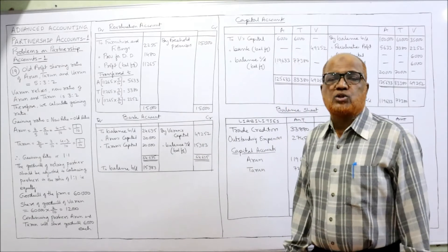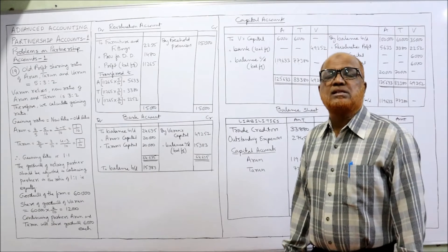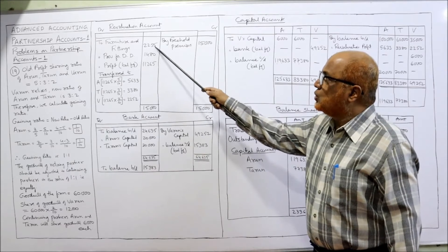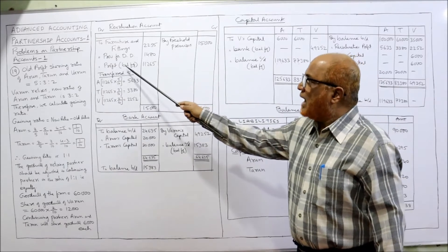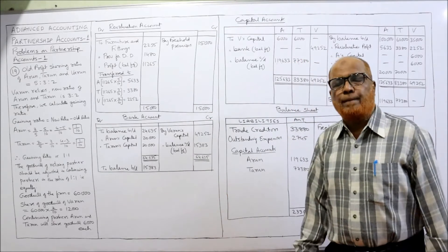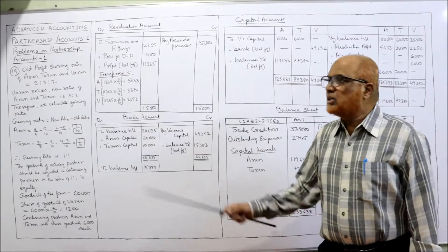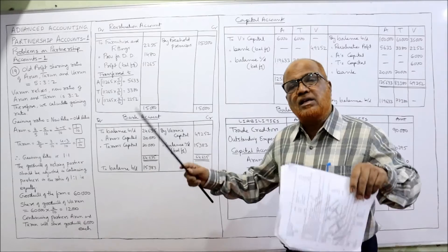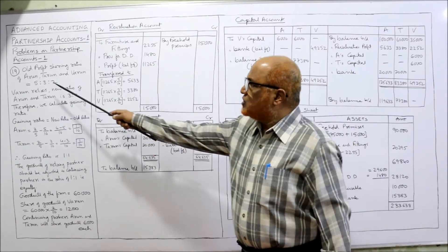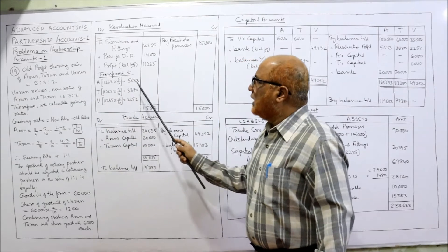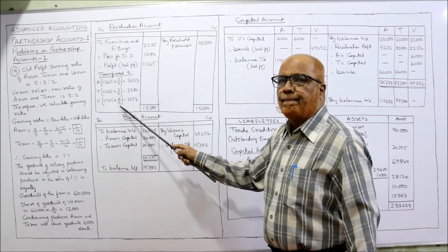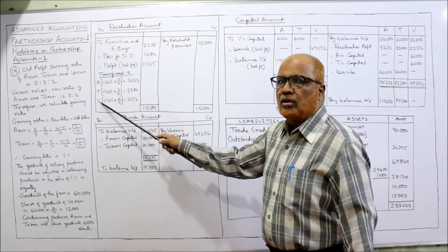Since the credit side (15,000) is more than the debit side, there is a profit on revaluation. Profit = 15,000 minus 2,255 minus 1,480 = 11,265. This revaluation profit is shared by all partners including the retiring partner in the old profit sharing ratio 5:3:2. So Arun gets 11,265 × 5/10, Tarun gets 11,265 × 3/10, and Varun gets 11,265 × 2/10.